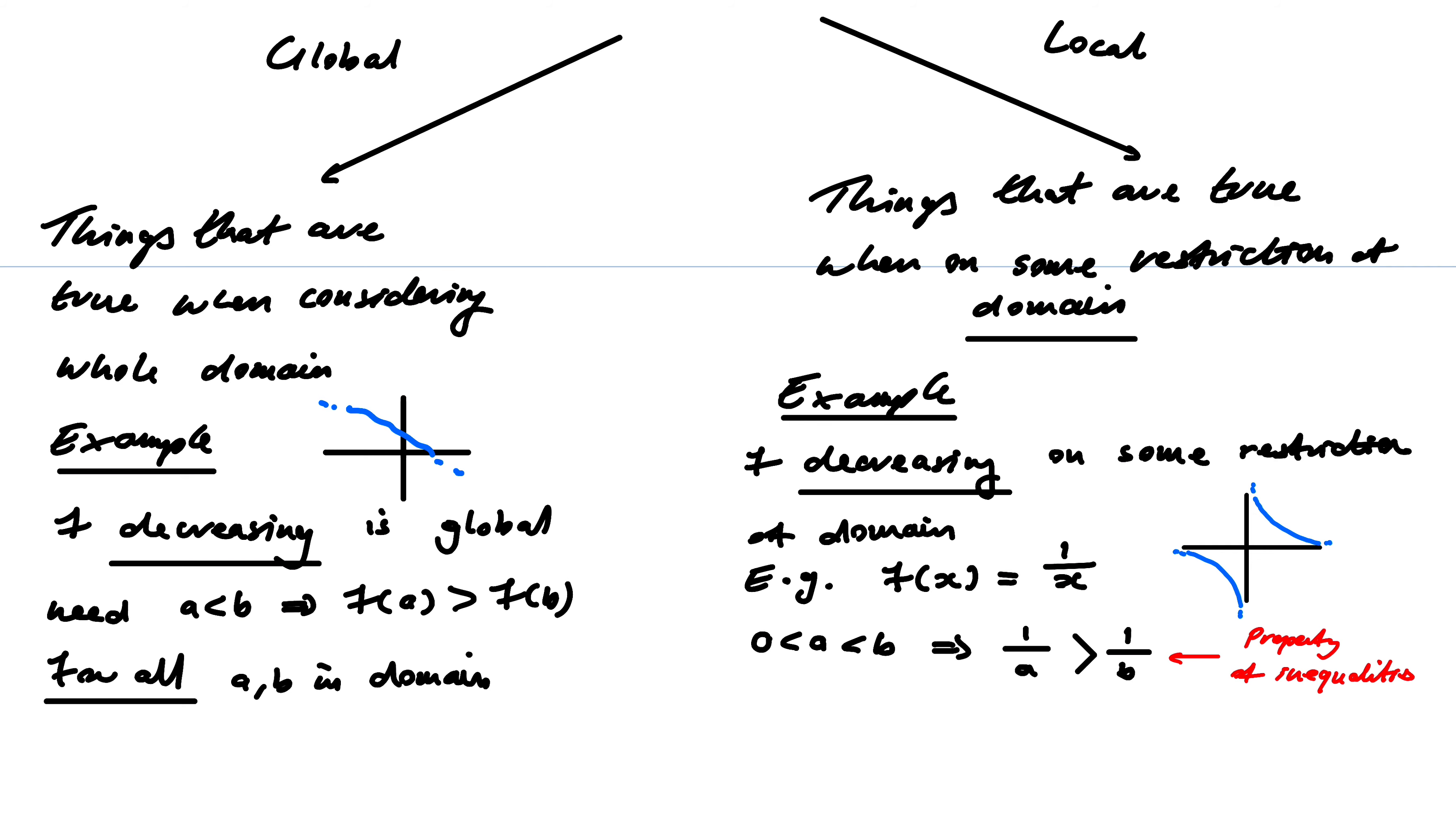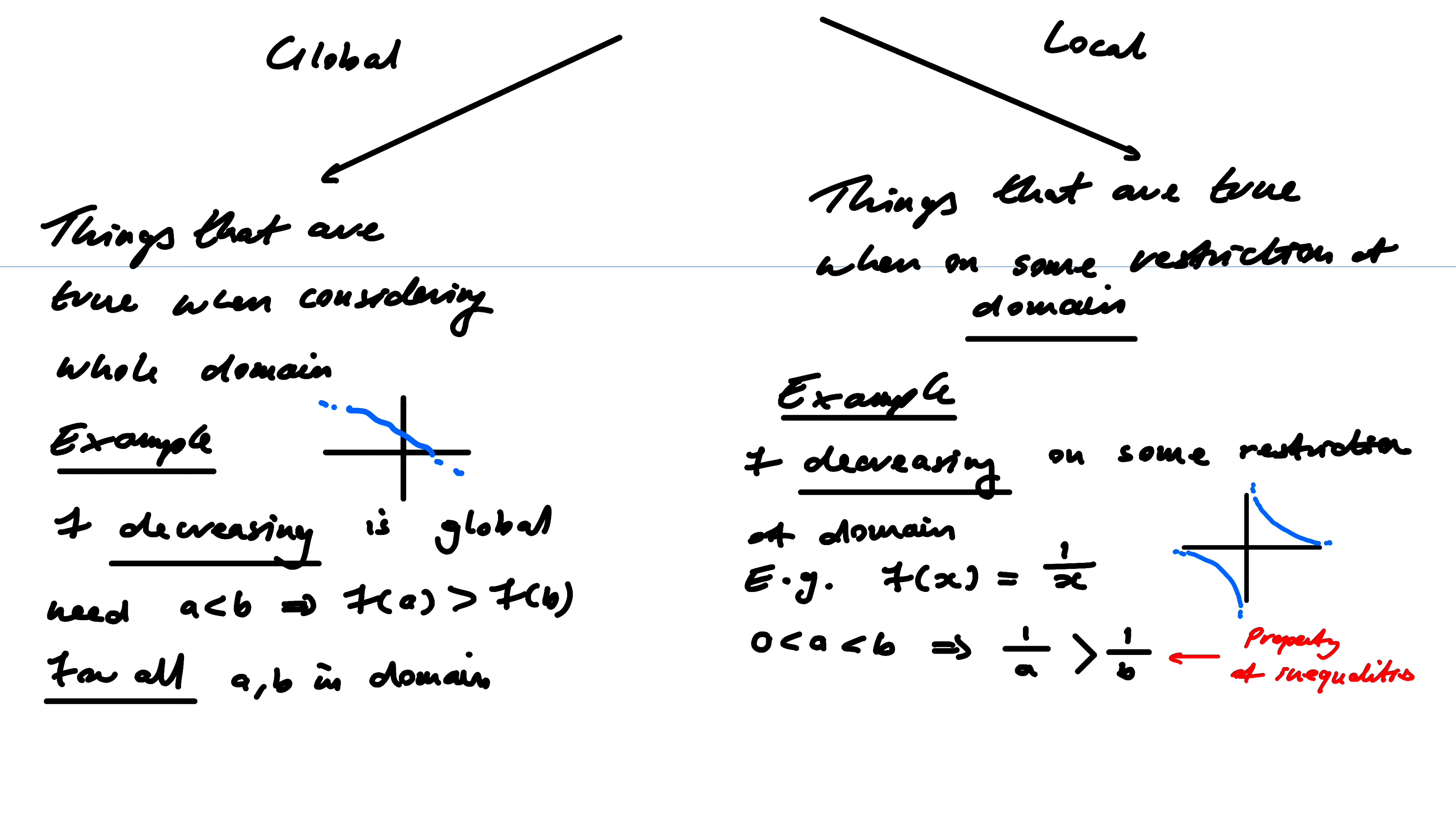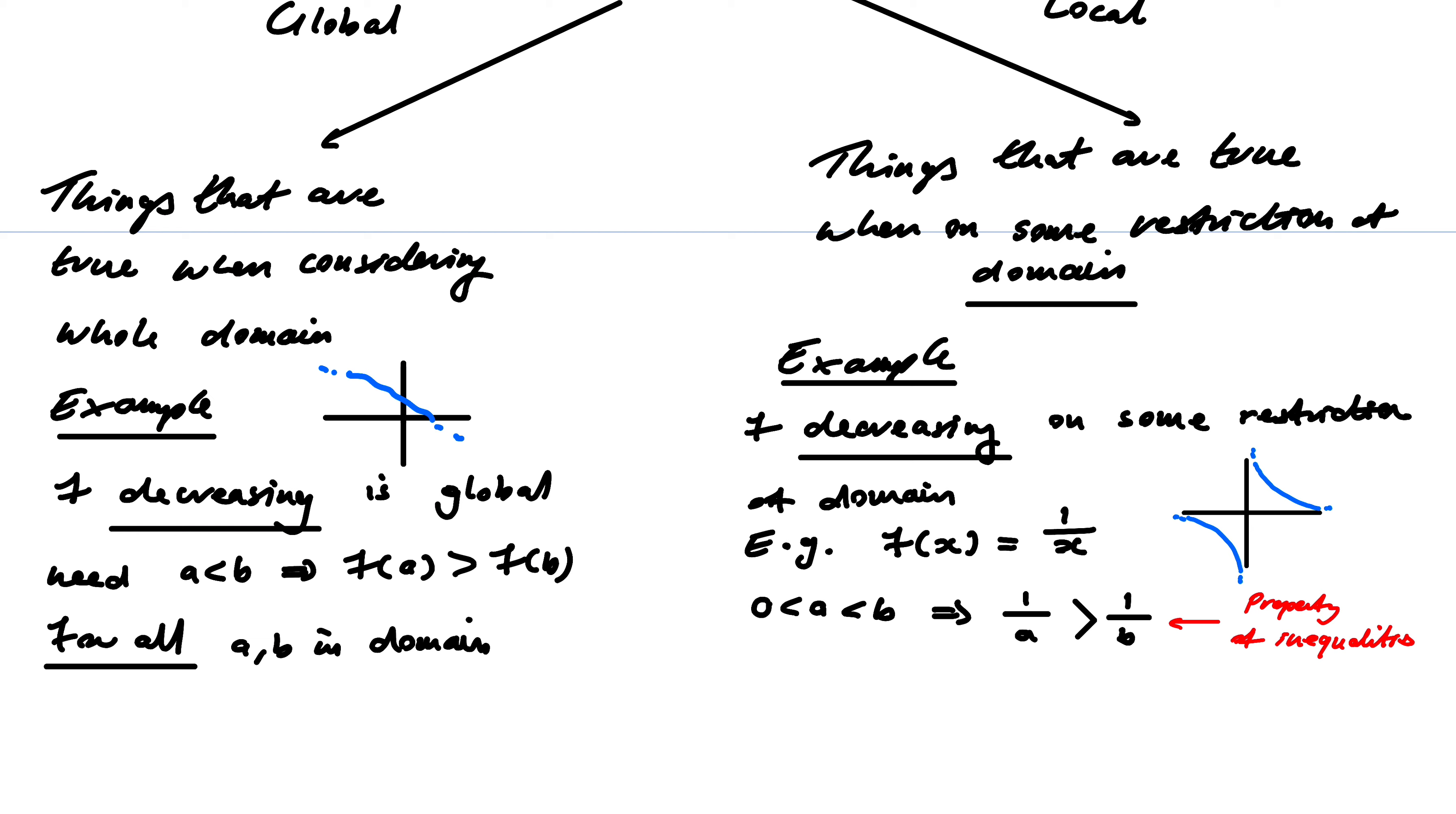So this is a property of inequalities. OK, so what do I conclude from this? Well, it is decreasing, but only if I restrict the domain to something. So this implies f decreasing, but only if I restrict from 0 to infinity. The same thing would work if I took a and b negative. If they were both strictly negative, I'd basically be on this side and another one of my properties would guarantee the same thing. It would be a reverse.